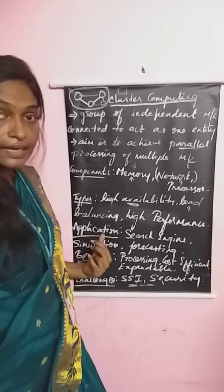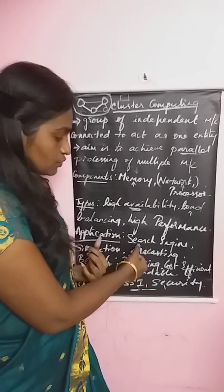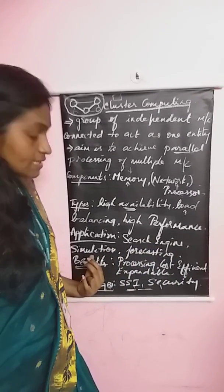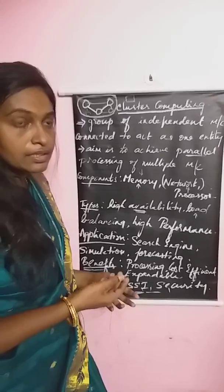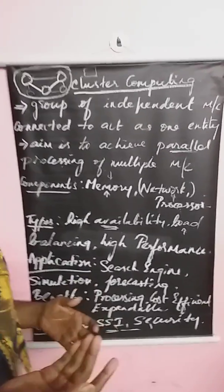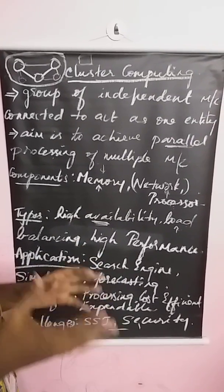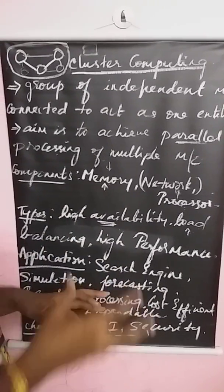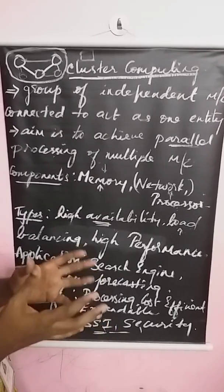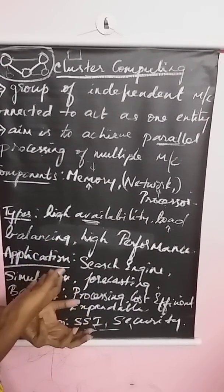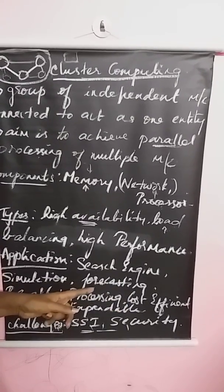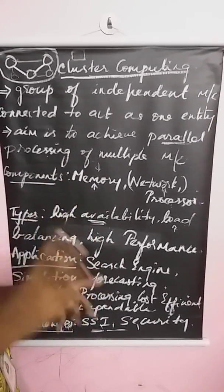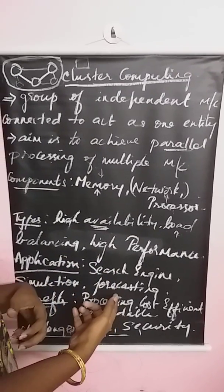The application areas where cluster computing is mainly used include search engines, forecasting, and simulation. For simulation — whether space simulation or earthquake simulation — instead of using one supercomputer, they use a cluster computer, organizing a set of independent nodes to work together as one single entity to simulate the earthquake or forecasting. For weather forecasting, cluster computing is used where different machines are located at remote areas, all interconnected, working together for forecasting weather.